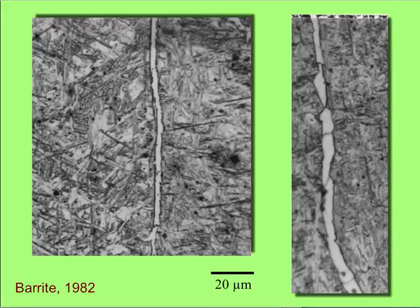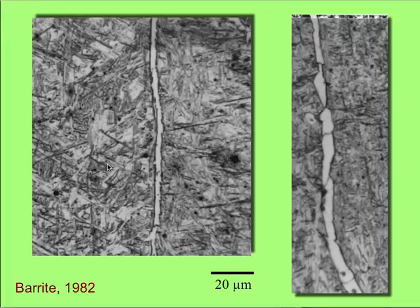This is a different problem - we are not talking about a plate growing, but a one-dimensional growth of a layer of ferrite. One-dimensional means it is growing only in the direction normal to the layer. I am switching to the document camera - how would I set up the problem for working out the thickening rate of that layer of ferrite?